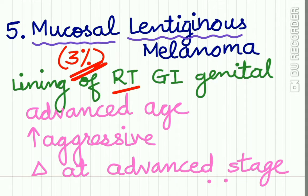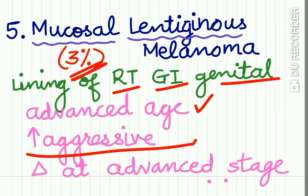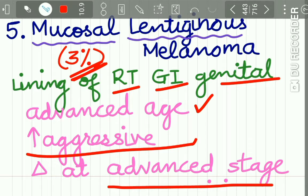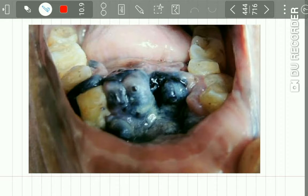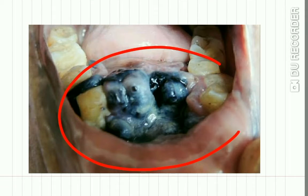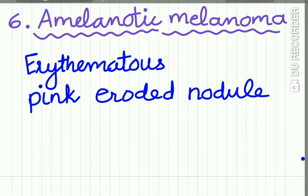Mucosal lentiginous melanoma accounts for only 3% of lesions. This type may occur in the respiratory tract mucosa, GI tract mucosa, or genital tract. It occurs in advanced age, is highly aggressive, and diagnosis typically occurs at a very advanced stage.